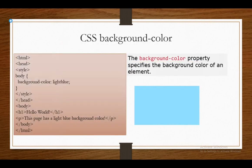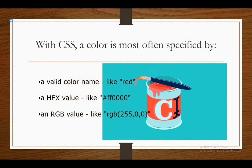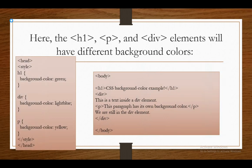First we are going to see about CSS Background Color. The background color property specifies the background color of an element. Here I have given you a small example — this will display a light blue background. With CSS, a color is most often specified by a valid color name like 'red', a hex value like #FF0000, or an RGB value like rgb(255, 0, 0) — all of these represent red. Here I have given an example where H1, paragraph, and div elements will have different background colors.